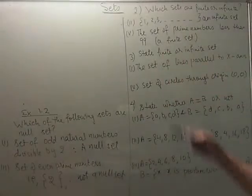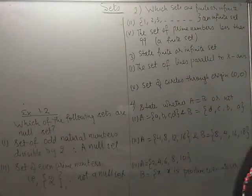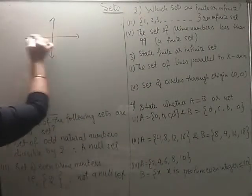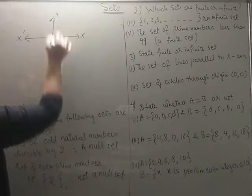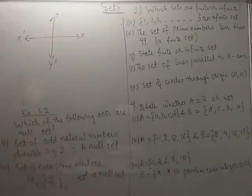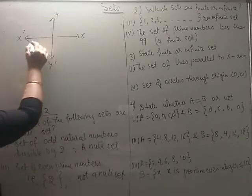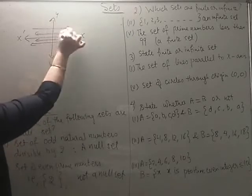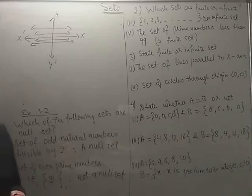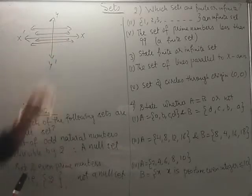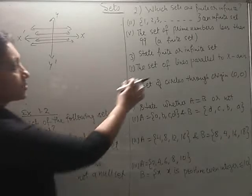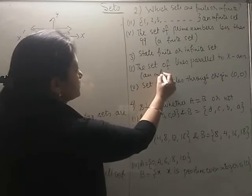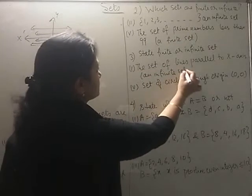Again, the next one is about checking whether it is finite or infinite. I will try to draw here for the same. See for the first one, the set of lines parallel to x-axis. So if I draw a Cartesian plane here, you can easily visualize that parallel to this axis, you can make as many lines as possible. This is one line parallel to x-axis, another, third, fourth, and in between these two lines infinitely many lines can be drawn which will be parallel to the x-axis. So this is an example of an infinite set.